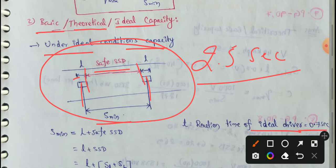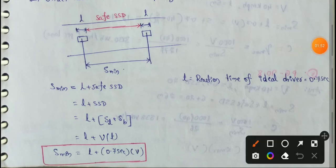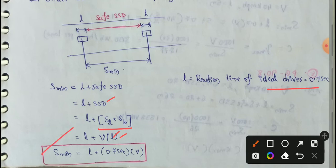S minimum, the minimum space headway, equals L plus safe SSD (Safe Stopping Distance). Stopping distance equals SL plus SB — that is, lag distance plus brake distance. The lag distance L equals V multiplied by T, where V is the design speed in meters per second and T is the reaction time of the ideal driver (0.7 seconds). So S minimum equals the length of the vehicle plus 0.7 seconds multiplied by V.